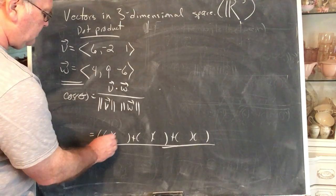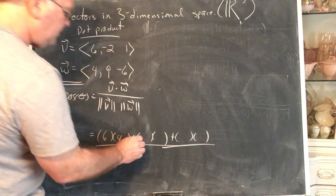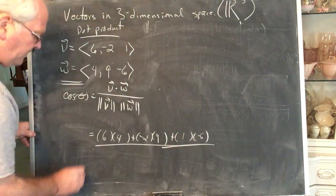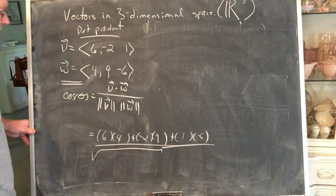So I have six times four, negative two times nine. I have one times negative six and now we have a great big product of the magnitude.